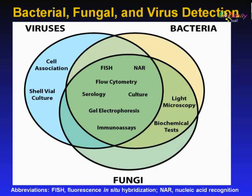This Venn diagram illustrates available diagnostic testing methods for bacterial, fungal, and viral infections. The left blue circle represents viral testing methods, the right yellow circle represents bacterial testing methods, while the bottom green circle represents fungal testing methods. Each overlapping section represents diagnostic testing methods available for detecting all three types of pathogens, or any combination of the three. The majority of available assays can be used to detect viruses, fungi, and bacteria, including traditional methods such as serology and culture. Immunoassays and nucleic acid recognition assays such as polymerase chain reaction and loop-mediated isothermal amplification are constantly evolving. Rapid and highly sensitive and specific point-of-care nucleic acid recognition assays represent the future for diagnostic testing.